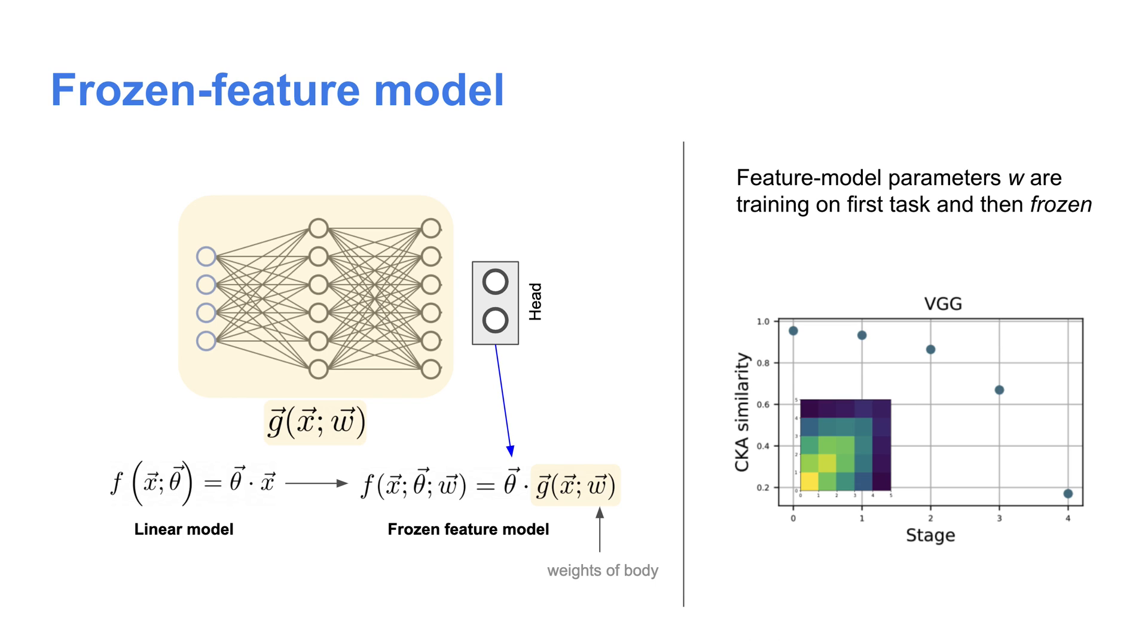With that in mind, let's take a model which more closely approximates what happens in real-world forgetting scenarios. This one we call the frozen feature model. In this model, we separate the network into the body, which extracts the features via this function g, and the head, which is a linear layer parameterized by theta. This is essentially the same as a linear model, except that instead of taking a linear combination of data features, we take a linear combination of features g which we extract from the data.